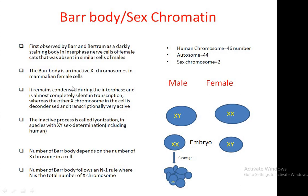The inactivated X chromosome remains condensed during interphase and is almost completely silent in transcription, whereas the other X chromosome in the cell is decondensed and transcriptionally very active. This inactivation process of one X chromosome in females is called lyonization.